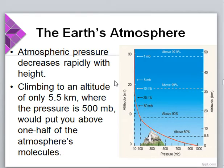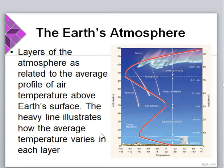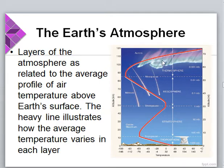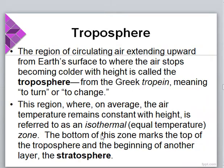Atmospheric pressure decreases rapidly with height, as observed in this illustration. Climbing to an altitude of only 5.5 kilometers, where the pressure is 500 MB, would put you above one half of the atmosphere's molecules. The layers of the atmosphere are related to the average profile of Earth's temperature above the Earth's surface. The heavy line illustrates how the average temperature varies in each layer — observe the trend.